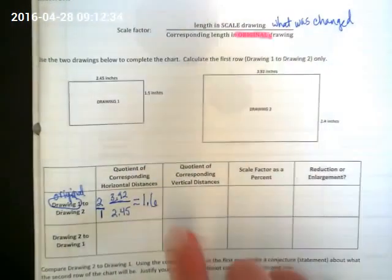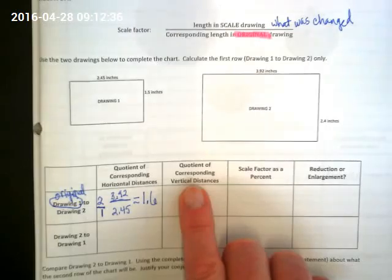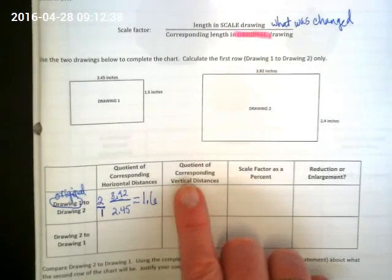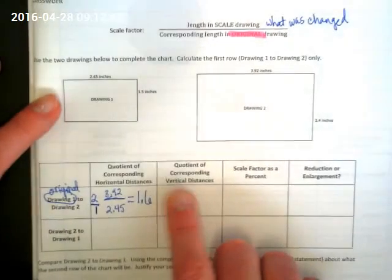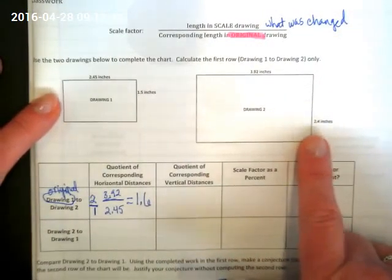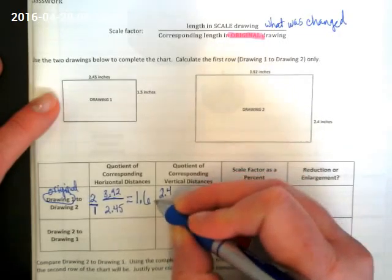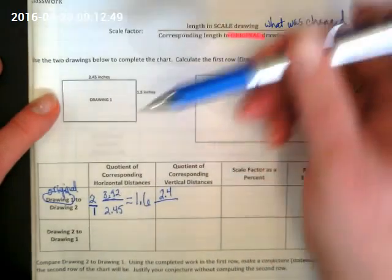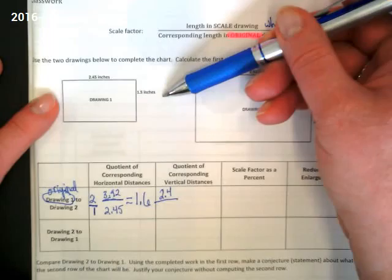To confirm that, we're now going to do also the quotient, meaning we're going to divide the corresponding vertical distances. Again, we're going to start with 2, which is 2.4, over its corresponding for vertical, which is 1.5.